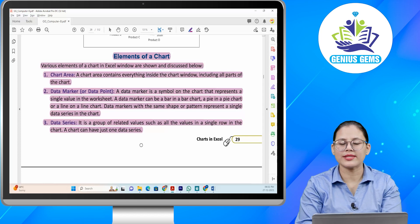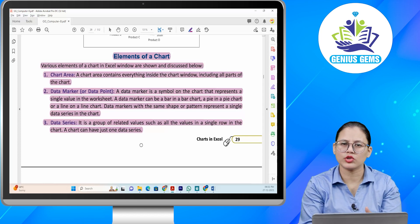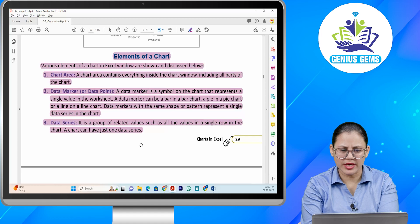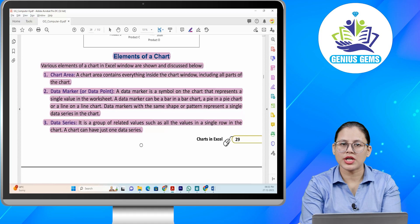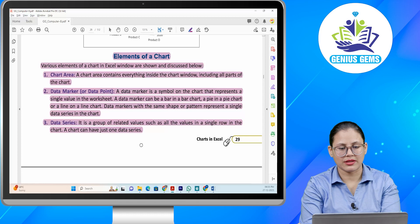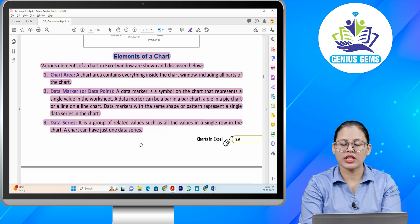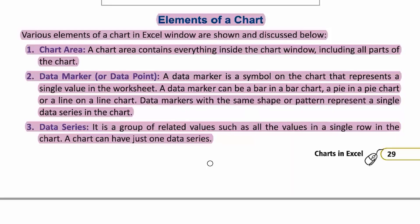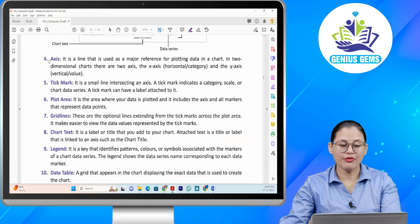Number three: Data series. It is a group of related values such as all the values in a single row in the chart. A chart can have just one data series. Chart area aapke chart window ke andar hota hai, usme charts ke saare parts hote hain. Data marker aapka wo symbol hota hai chart mein jo single value ko represent karta hai worksheet mein — bar chart mein bars, pie chart mein pie, aur line chart mein line. Data markers jo same shape ya pattern ke hote hain, wo ek single data series ko represent karte hain. Data series aapke related values ka group hai, jaise ki ek single row ki saari values chart mein.